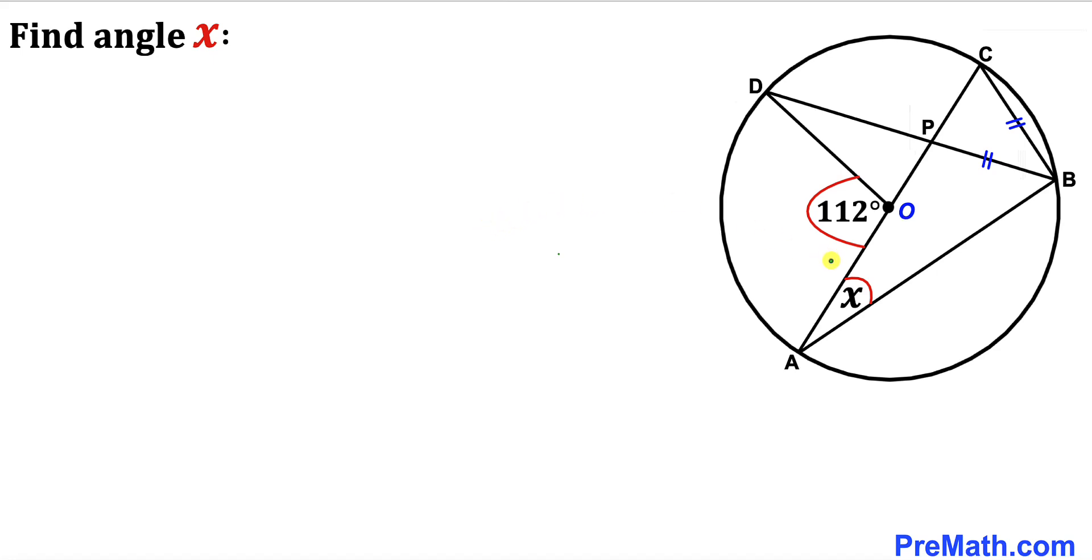Welcome to PreMath. In this video, we have a circle with angle AOD equal to 112 degrees, and line segments BP and BC are equal in length. We are going to calculate angle x.